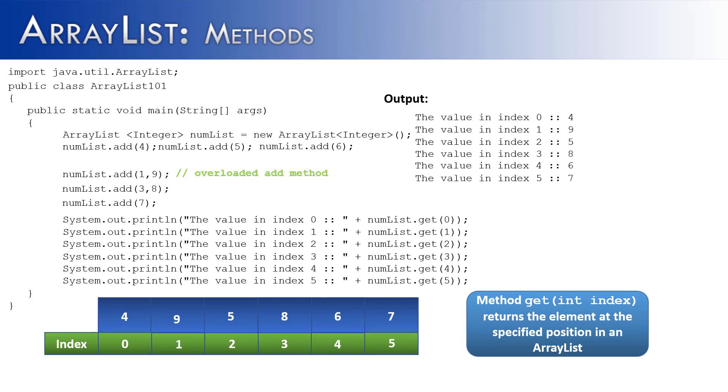So there are two add methods inside of the ArrayList class. The first one inserts at the end, the second one allows you to pick an insertion point, and then adds the value into the ArrayList.